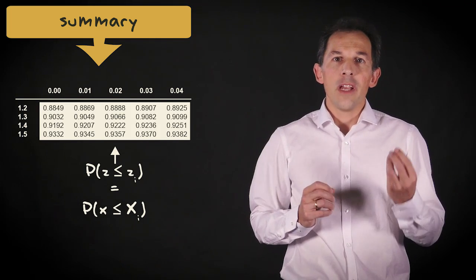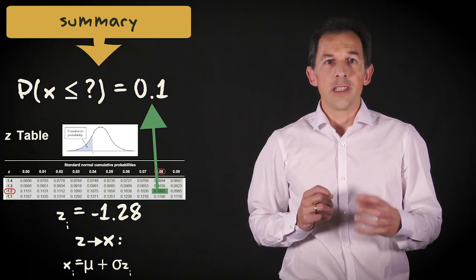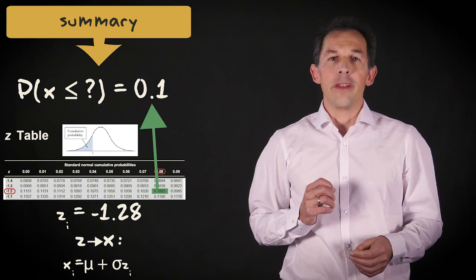Inversely, for a given probability, you can also find a Z-value in the table and calculate the data value X that matches with that cumulative probability.